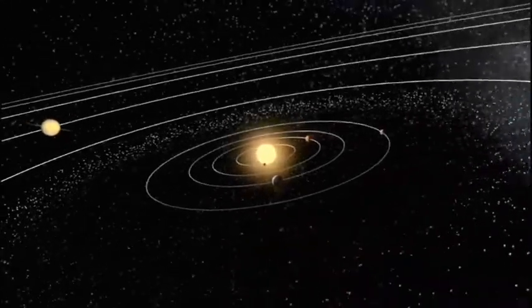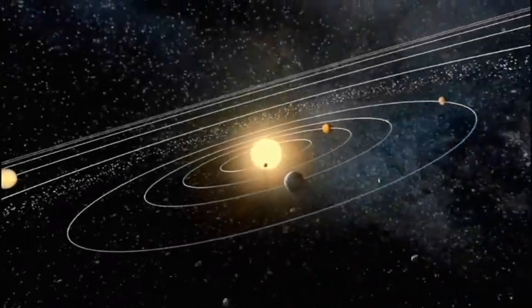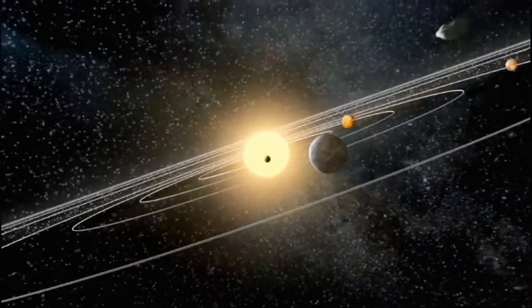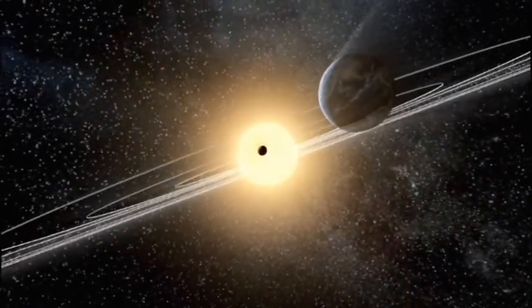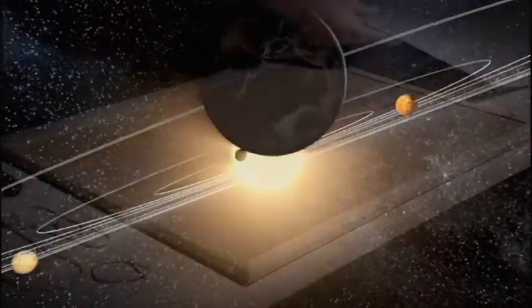The orbits of the planets, asteroids and comets around the Sun are not quite circular, but are in fact ellipses with the Sun at one of the foci of the ellipse.